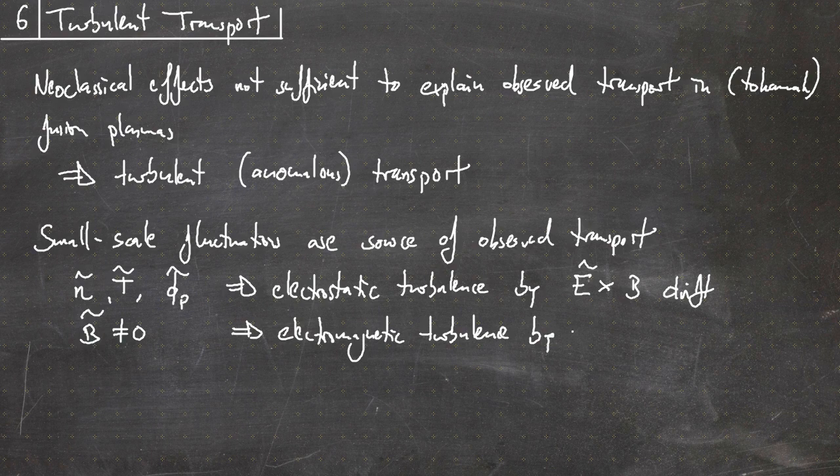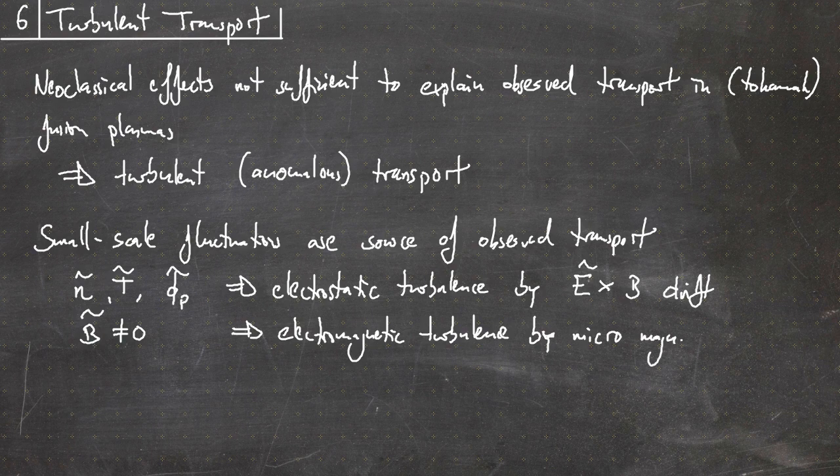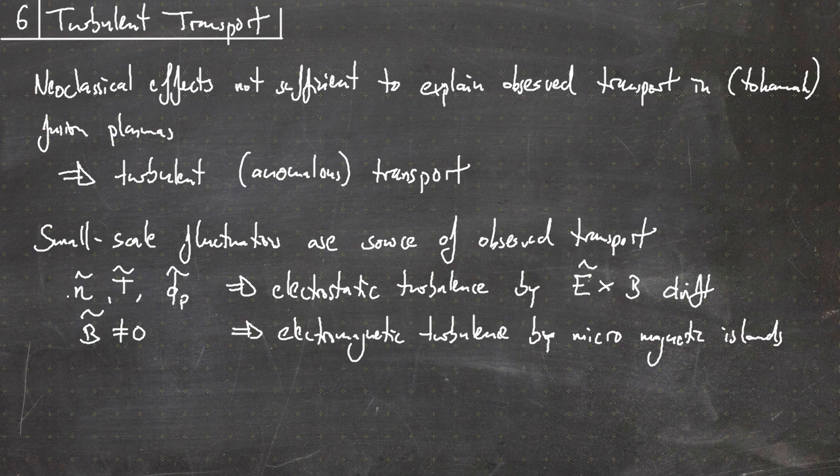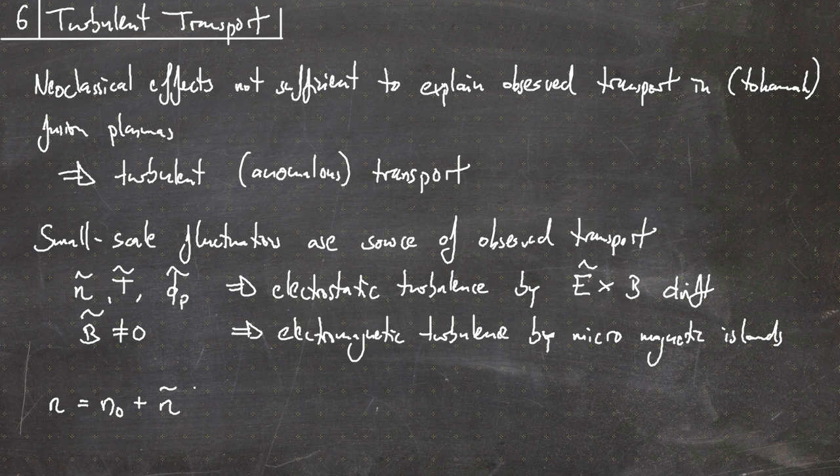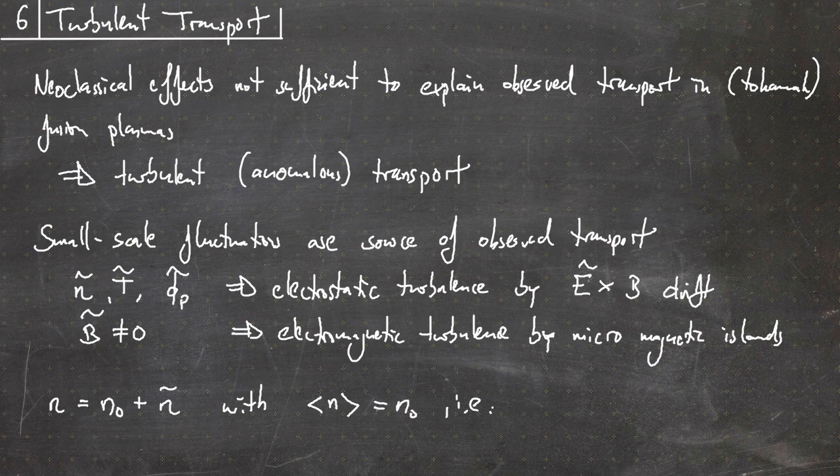For definition, the full density is the background density n₀ plus the perturbed density ñ, where the average value of the density denoted by these brackets is simply n₀, which of course implies that the average of the fluctuating part is zero.